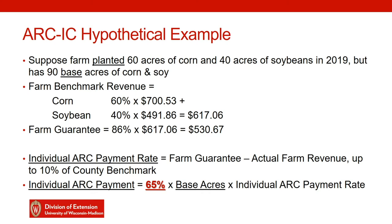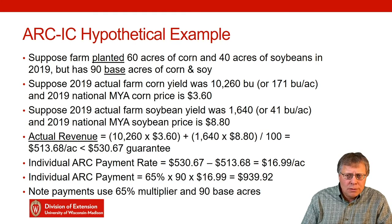Now you calculate your payment rate. Your farm guarantee is $530.67. If your actual farm revenue is below that guarantee, you trigger payments. The same maximum applies — for Dane County, that'd be just over $71, or almost $72. The ARC Individual payment rate is 65% times your base acres times the individual ARC payment rate. Note it's 65%, not 85% like ARC County, and it's based on your base acres, not your planted acres.